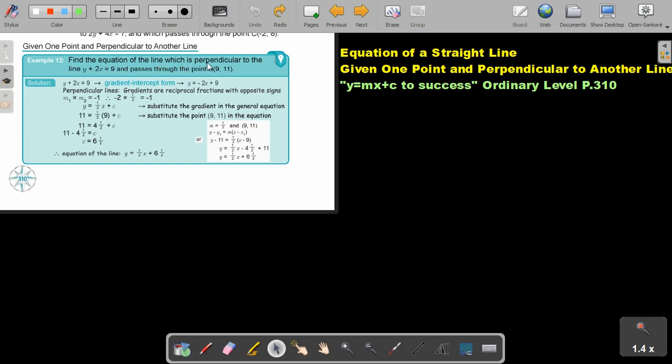Find the equation of the line which is perpendicular to this line and pass through this point. Okay, now, first, this is not in the gradient y-intercept form. So, I'm first going to rearrange this equation. I'm going to make it a bit bigger for you.